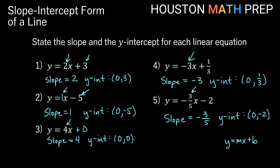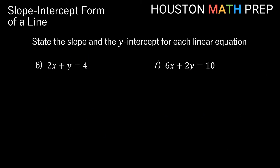Let's look at some examples that are not already in slope-intercept form. In order to find the slope and intercept easily, we want the equation in y equals mx plus b form — then we can see right away the slope and y-intercept value. If we look at 2x plus y equals 4, this isn't solved for y.